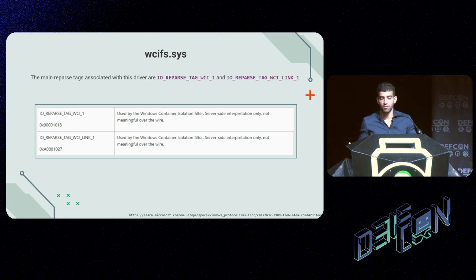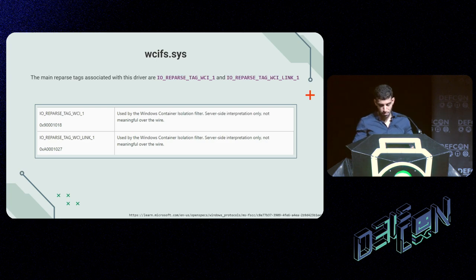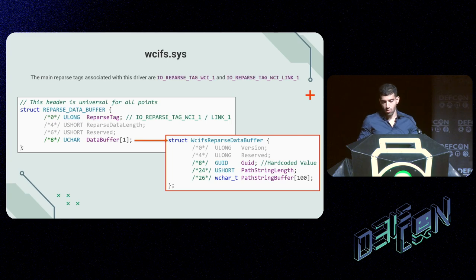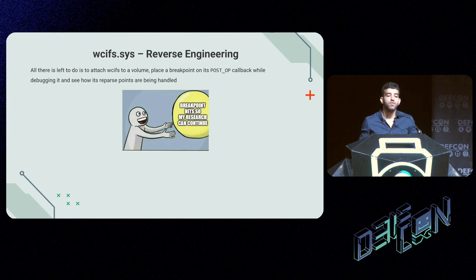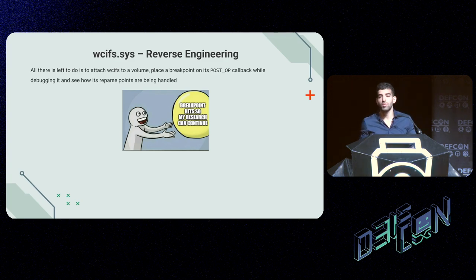After some basic reverse engineering, I managed to map both of the reparse points' internal buffers, which were the same. The buffer contains a GUID — a hardcoded value found on any of the WCI tags — and the path to the destination file. All that was left was to attach the WCIFS driver to a volume, debug it using a debugger, and place a breakpoint on its post-operation callback to see how the reparse points are handled and how they could potentially be abused.